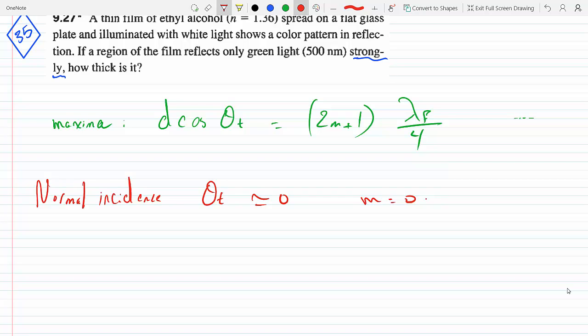So we get d cosine zero equals lambda f over 4. Now lambda f in the film is just lambda in vacuum divided by the index of refraction of the film. So plugging this in we're going to get lambda 0 over 4n.